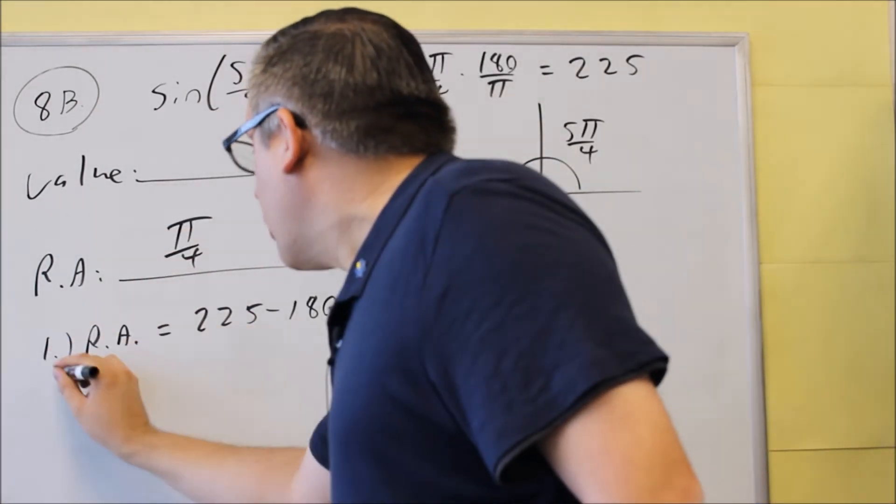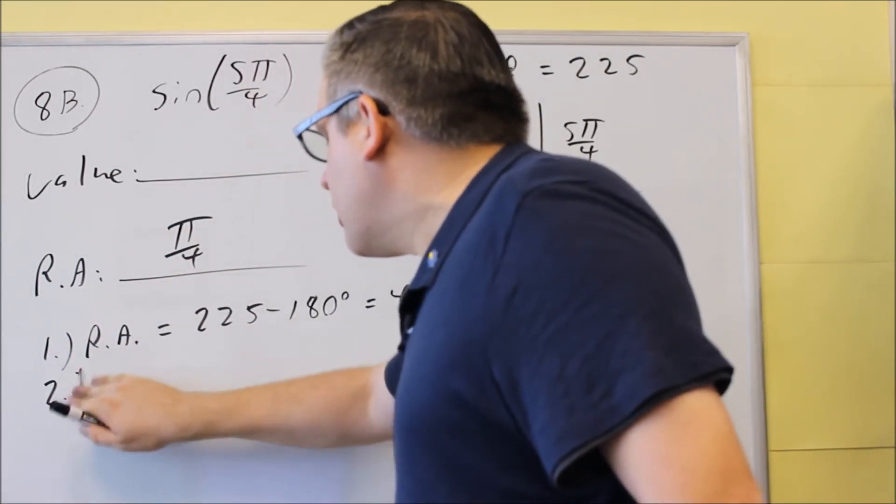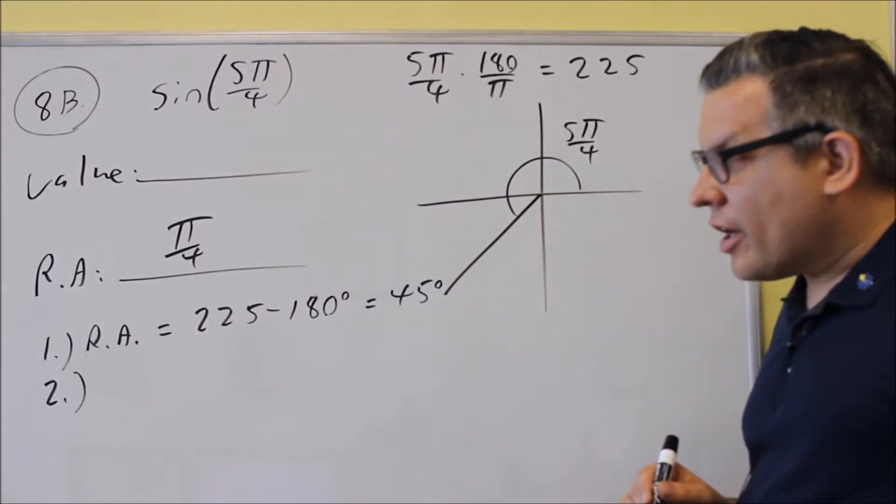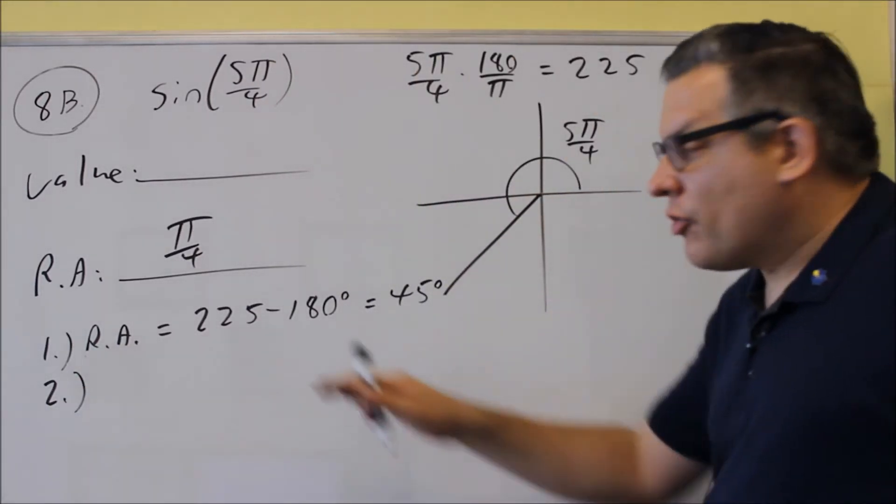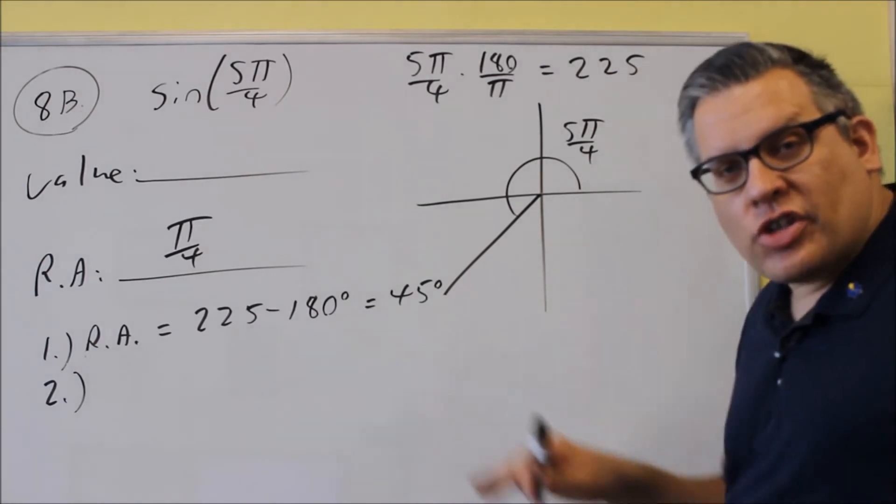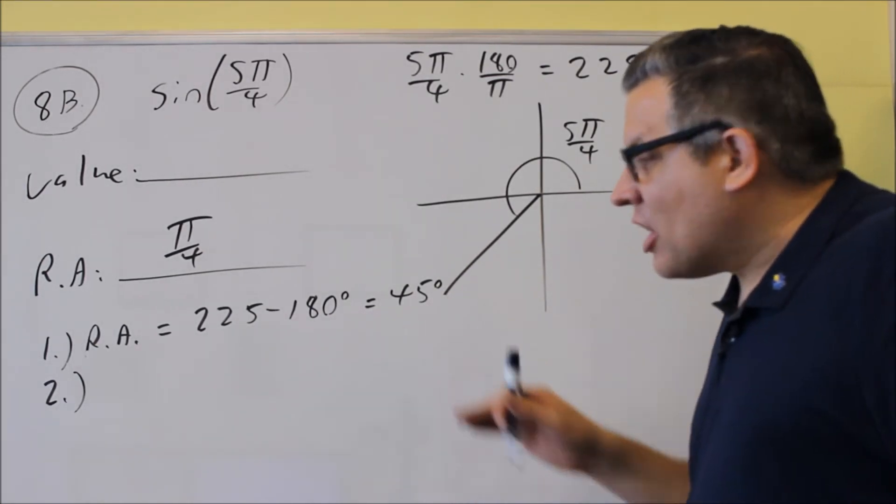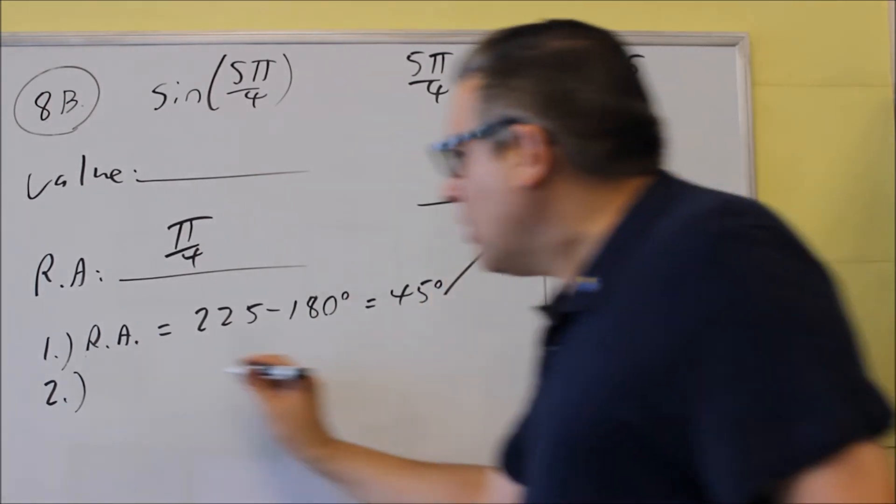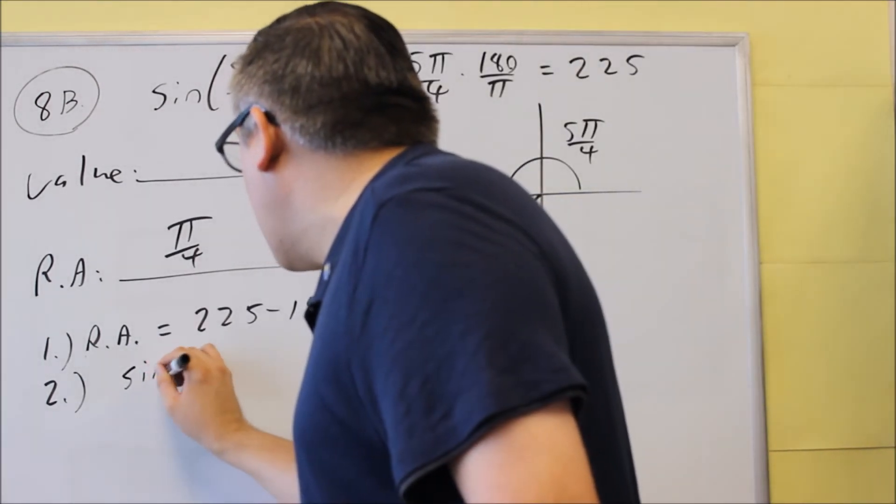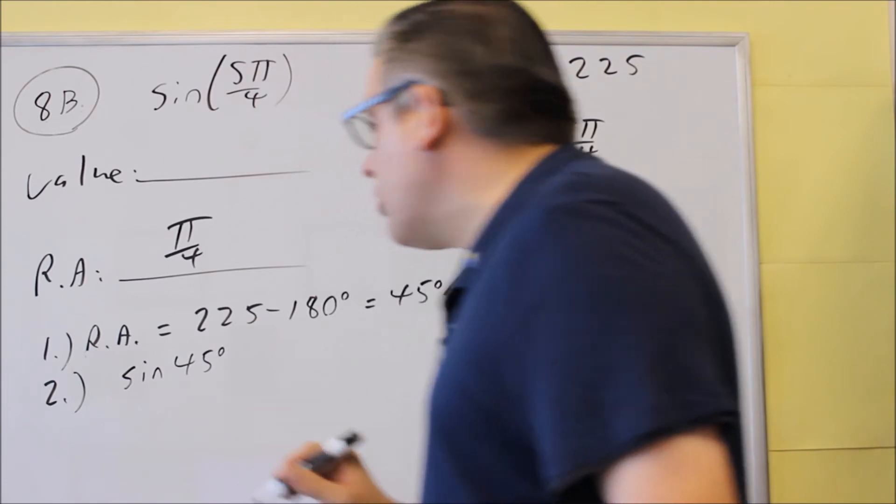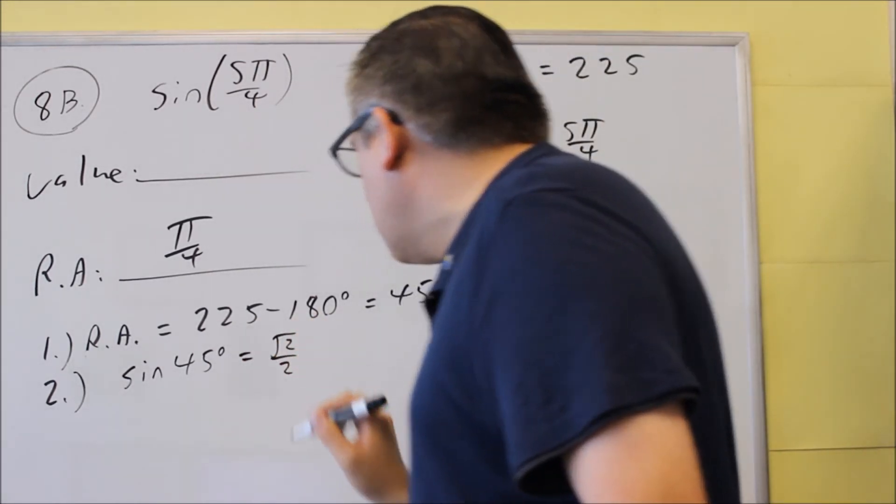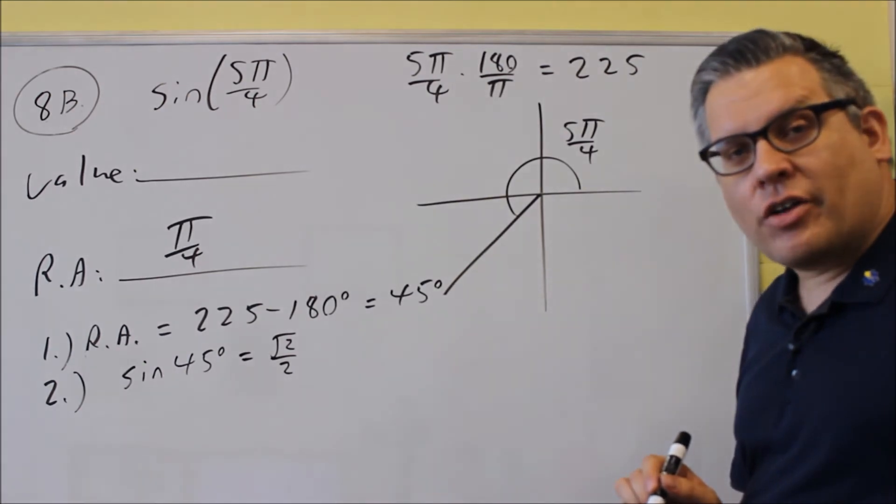When we want to find the value, we're really doing this three-step process here. So we have 2 is going to be next. The second step where we're going to find the value, we found the reference angle, that's the first step. The second step is to apply the trig function to the reference angle. The trig function is sine, so we're going to do sine 45, which is √2/2 would be the exact value.